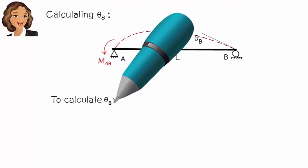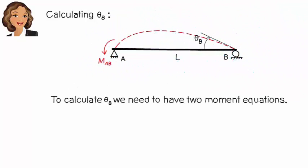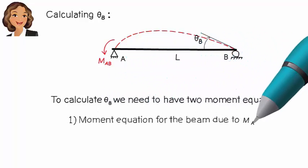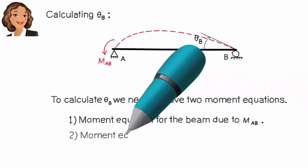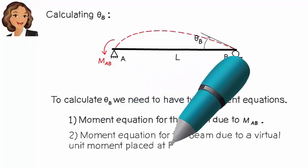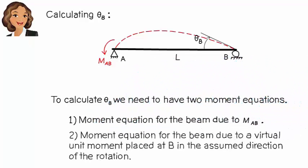To calculate theta B, we need to have two moment equations: moment equation for the beam due to M_AB, and moment equation for the beam due to a virtual unit moment placed at B in the assumed direction of the rotation.